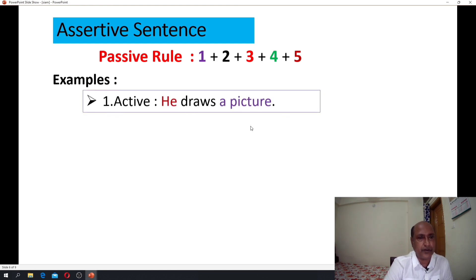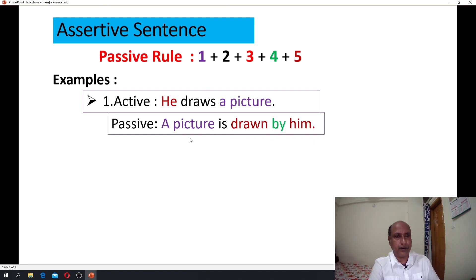He draws a picture. Passive: a picture is drawn by him. Here, a picture is drawn by him. Let's see the rule. One, two, three, four, five. Number one, object-subject. Number two, be verb is. Number three, main verb past participle. Number four, peer position. Number five, he take him.